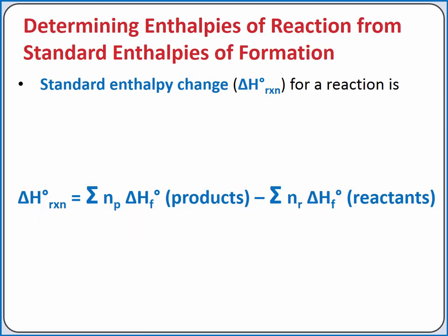We can use the standard enthalpies of formation to calculate the standard enthalpy change for a reaction. Since change in enthalpy is a state function, we can calculate it using final minus initial. So we can sum the enthalpy change to form all of the products and subtract the sum of the enthalpy change to form all of our reactants.